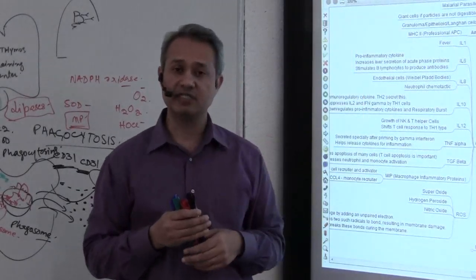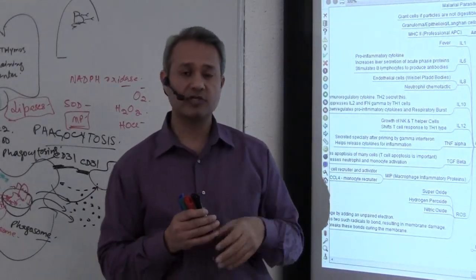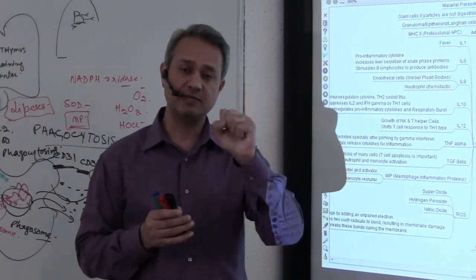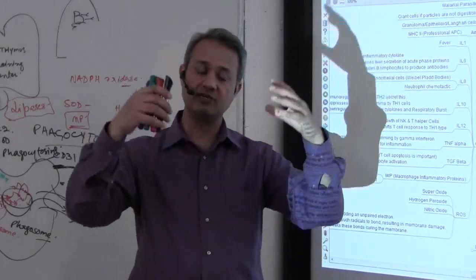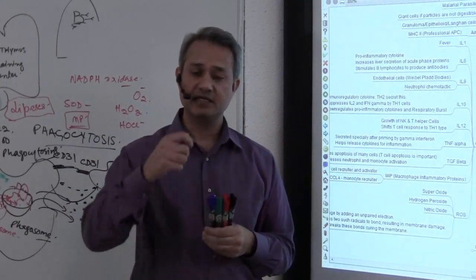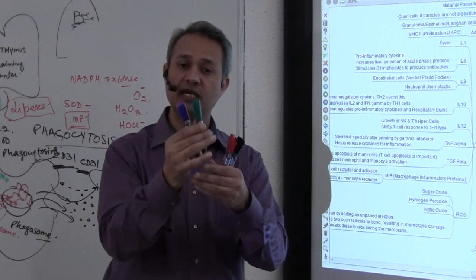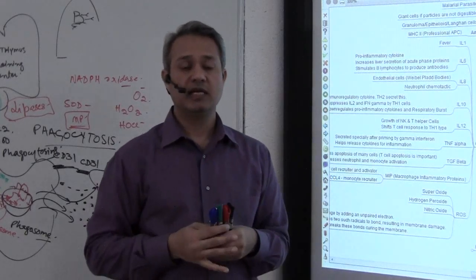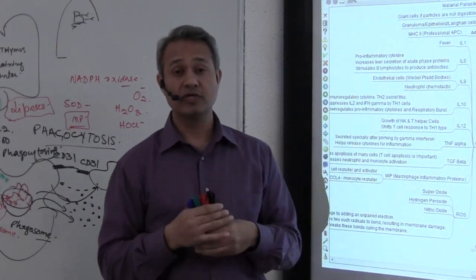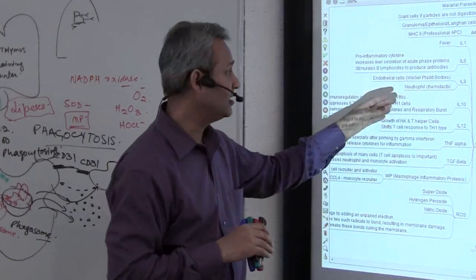So second line of defense is a macrophage. Macrophage is going to, that Langerhans cell, is going to eat up this pathogen. It's going to break it up. It's going to present it on the antigen-presenting cell. It is an antigen-presenting cell. So it's going to present it onto the MHC2. Now it would also secrete the chemotactic factors. Just like here, IL-6.